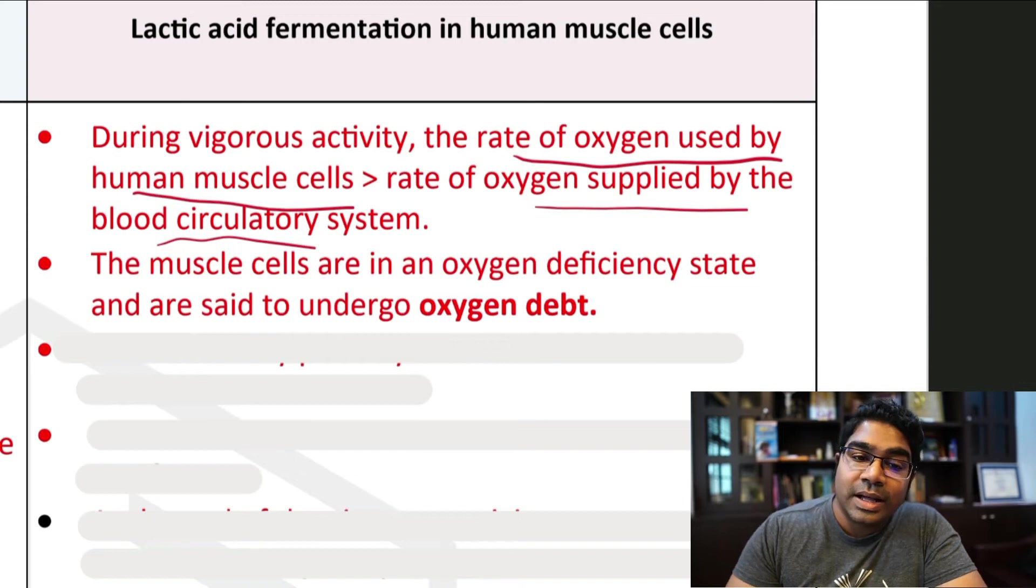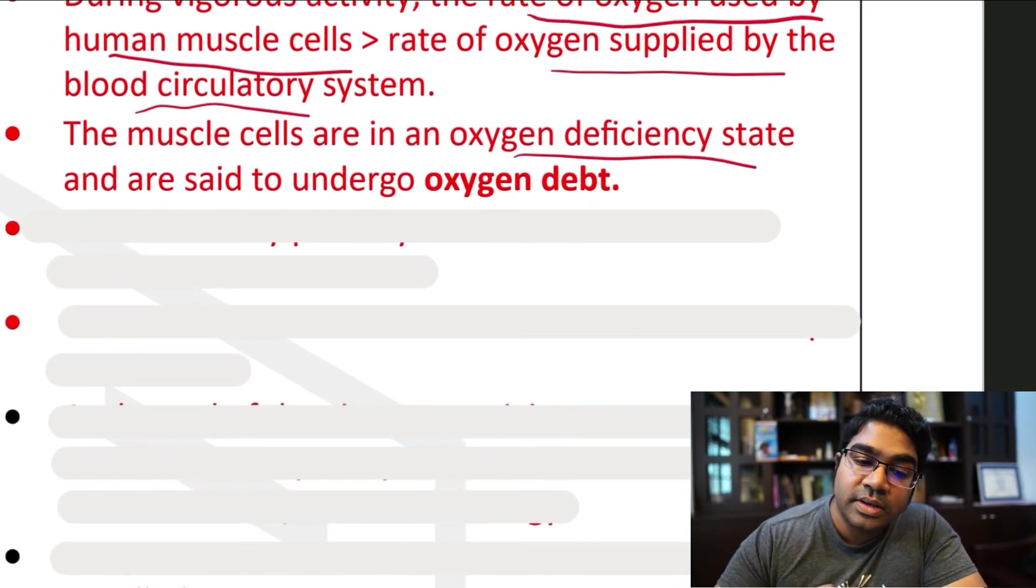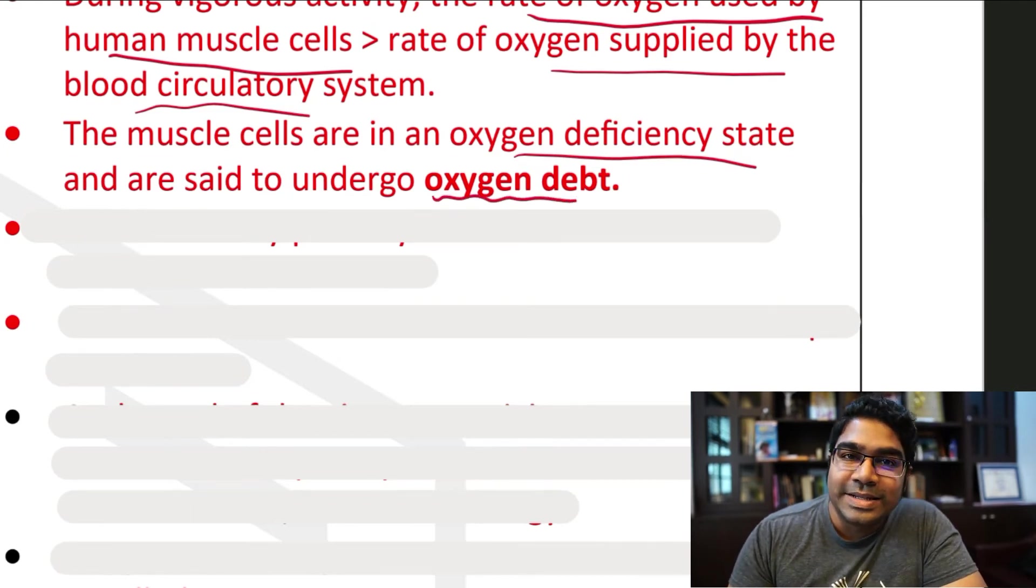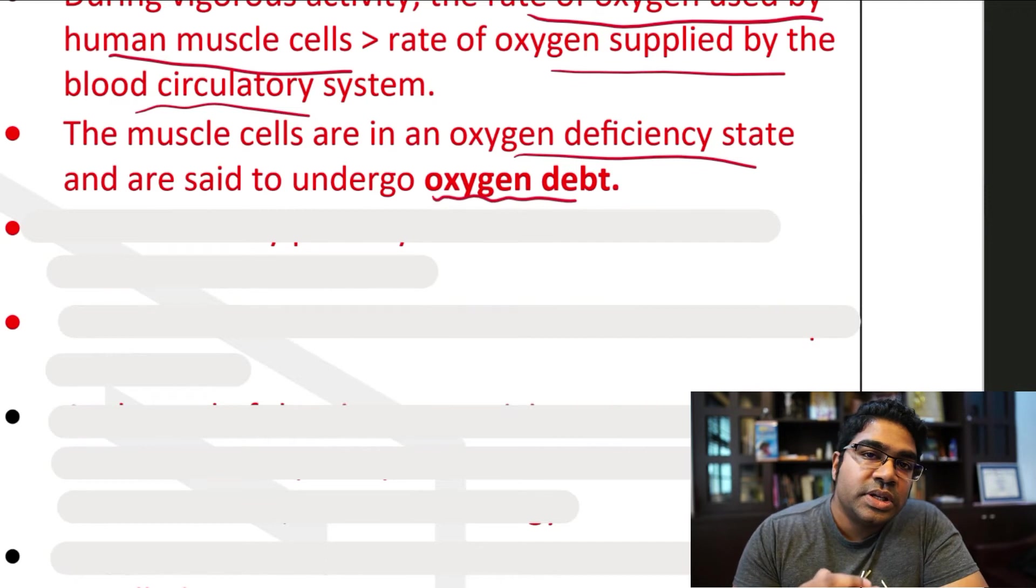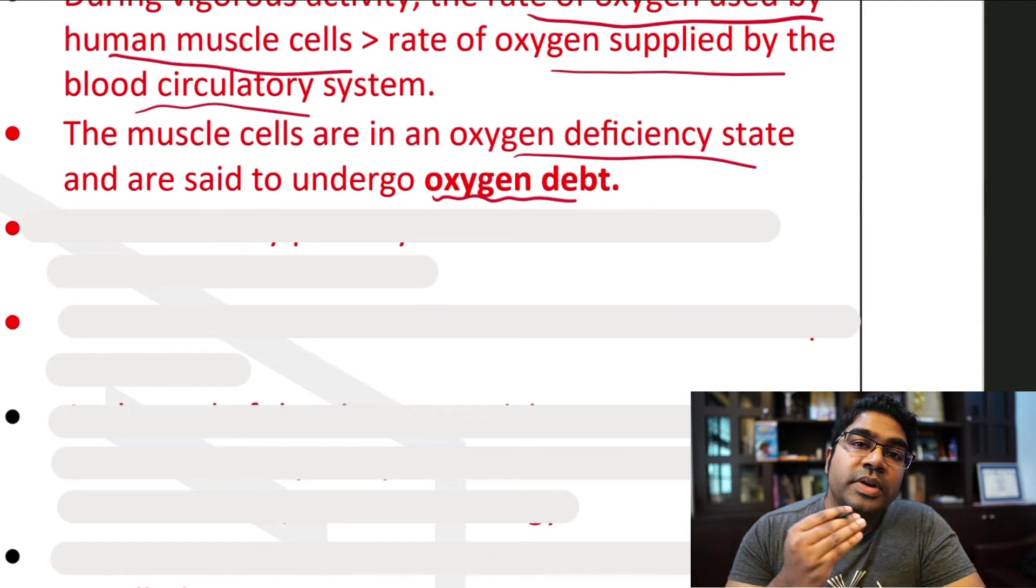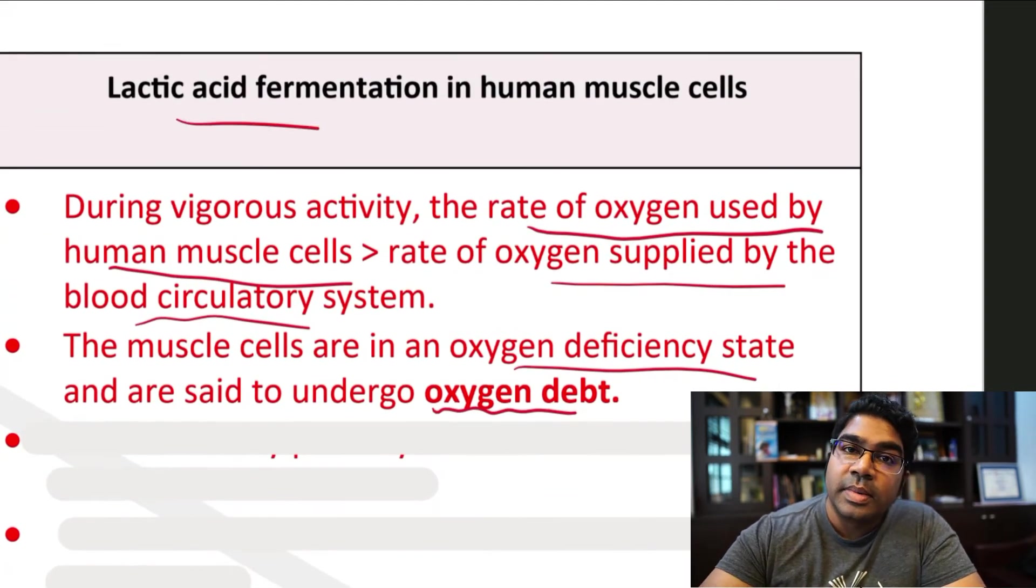The muscle cells are said to be in an oxygen deficiency state and they are said to undergo oxygen debt. So now the conditions are not enough oxygen. Therefore, the cell will resort to anaerobic respiration in the form of lactic acid fermentation.